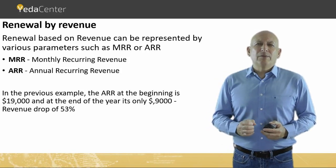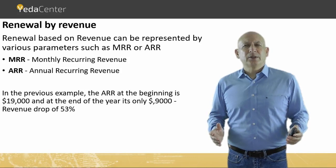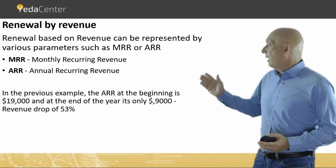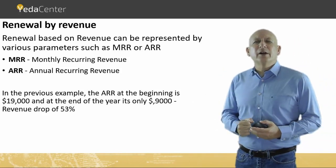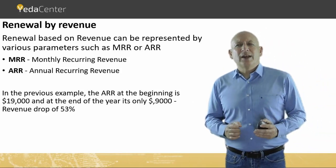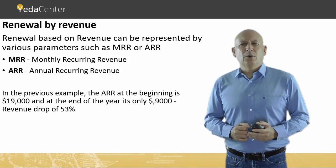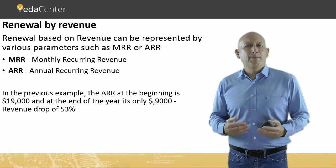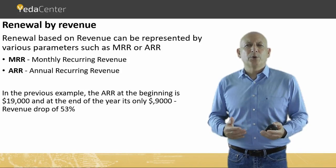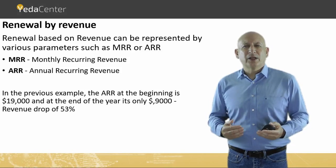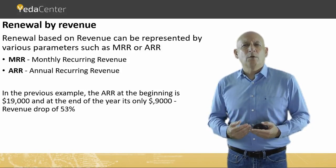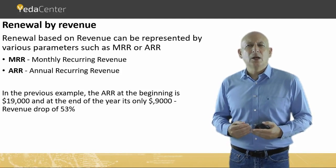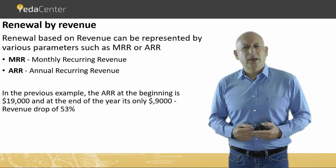Renewal based on revenue can be presented by various parameters, such as MRR and ARR. MRR — monthly recurring revenue — reflects the monthly turnover of the company from its subscriber customers, mainly for software products using a subscription model. ARR — annual recurring revenue — is the same but with a view of the annual turnover from subscriber customers.